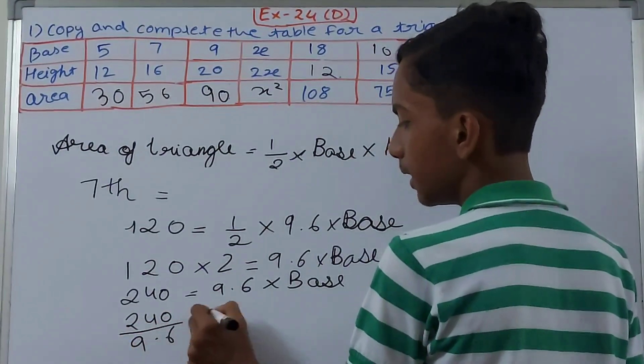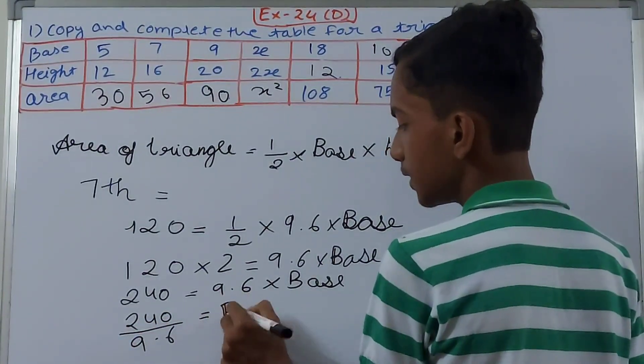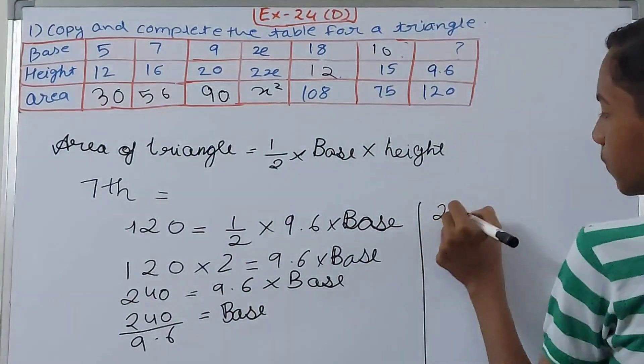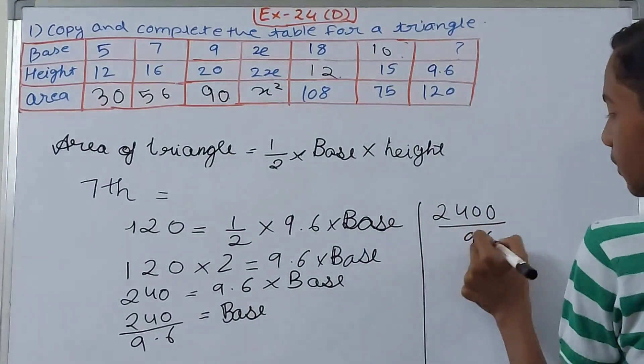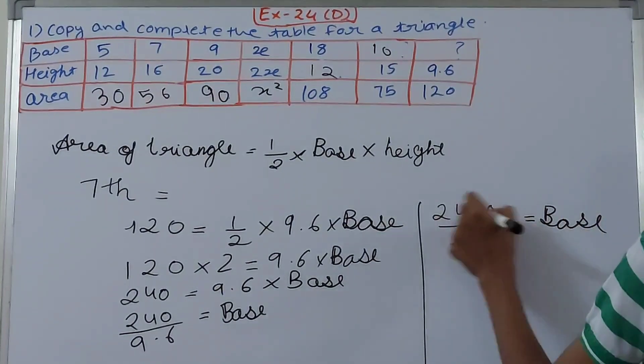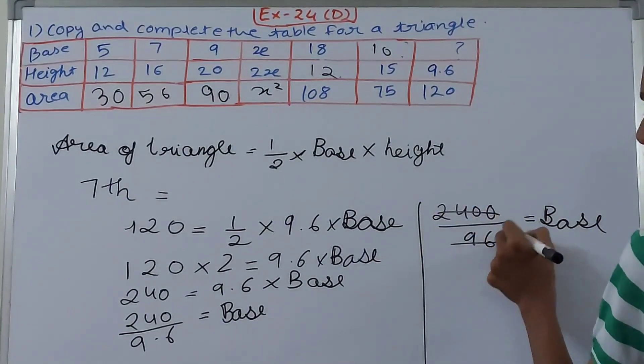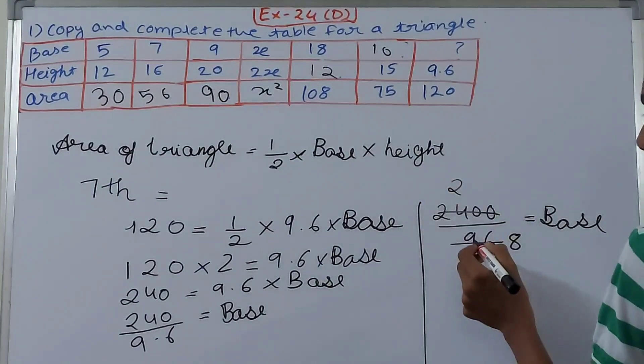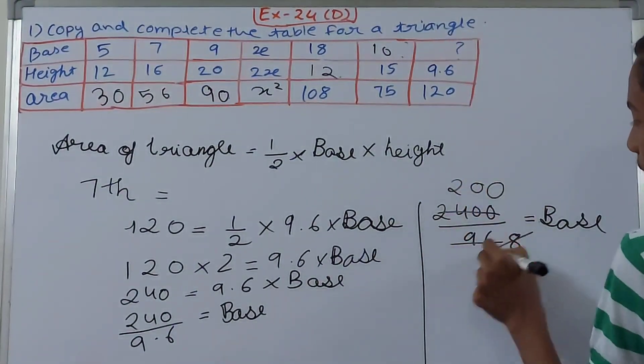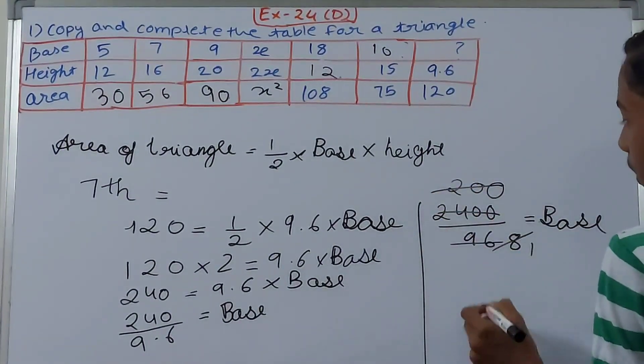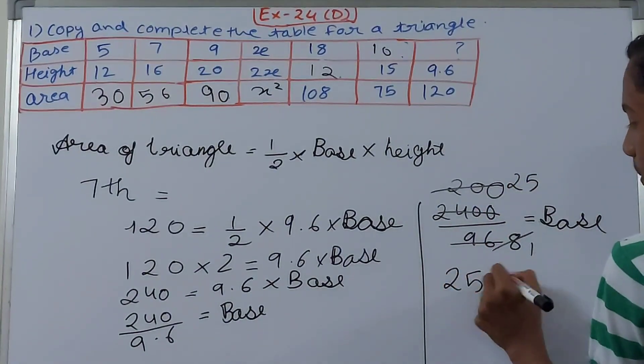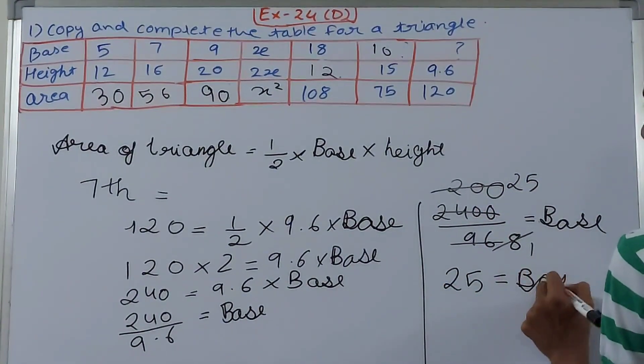That's 240 upon 96. We're going to remove the decimals. Let's cancel it by 12, so 24 two times, and then two zeros here. Cancel it again, so it becomes 25. 25 equals the base, so here we'll put 25.